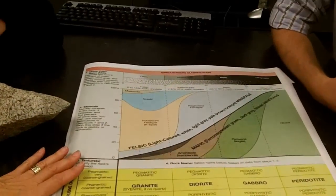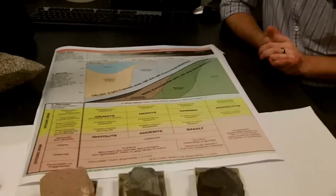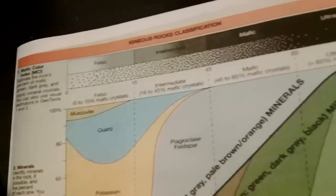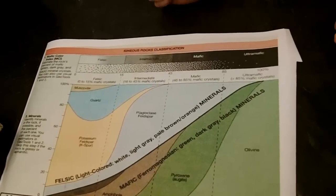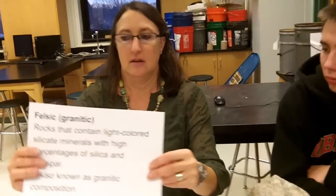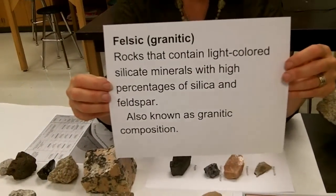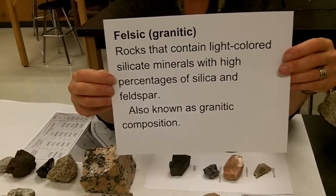So on our chart, this is going to be a very helpful tool. We need to know the texture and we need to know the composition. The composition is represented in the top portion of the chart, and we're going to start by thinking about whether the rock is overall a light color or a darker color. We have special names for the lighter and darker color rocks. The lighter color rocks are called felsic rocks — sometimes called granitic — and those contain the light colored minerals: silicate minerals with high percentages of silica and feldspar.